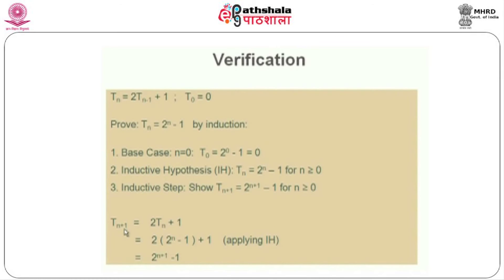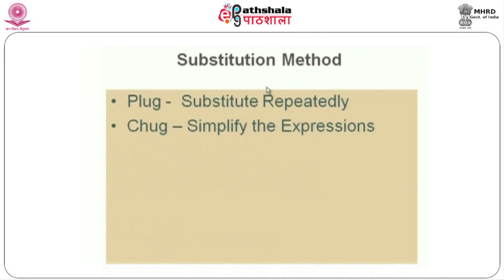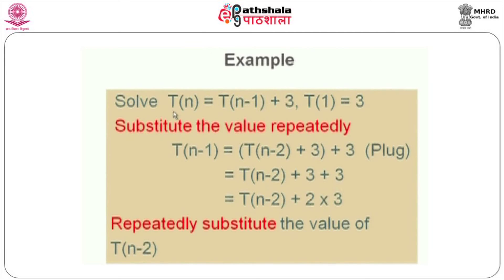The second method is called the substitution method. In this method, we repeatedly substitute and once we substitute, we try to simplify the expressions. In other words, this method consists of 2 steps: one is called plug, where we keep on repeatedly substituting, and the other is called chug, where we try to simplify.